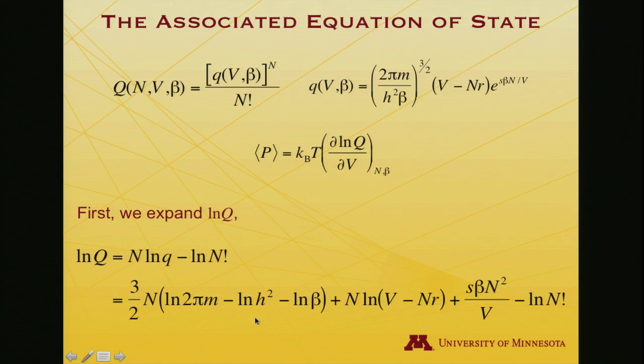All these terms we saw before. Now where for the ideal gas we had n log v, now we have n log quantity v minus n r, so that's this piece. We also have a log of an exponential, so that just becomes the argument of the exponential, so here you have it, s beta n squared over v, and then finally the log n factorial term, which has always been around.